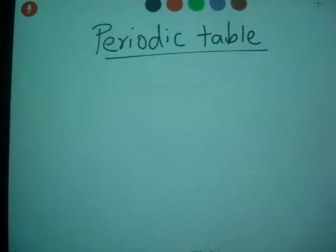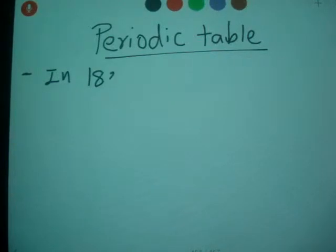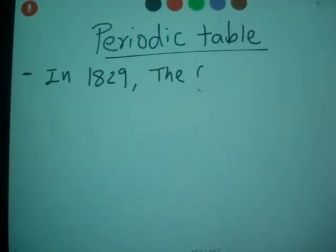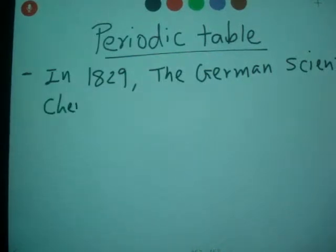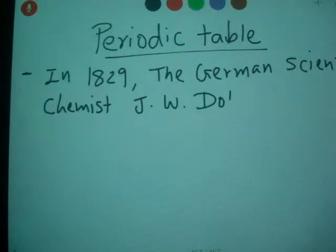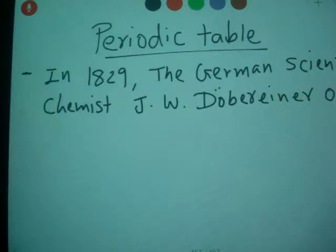Chemists had been looking for a method to classify elements. In 1829, the German scientist — his name is J.W. Döbereiner — he observed several elements.